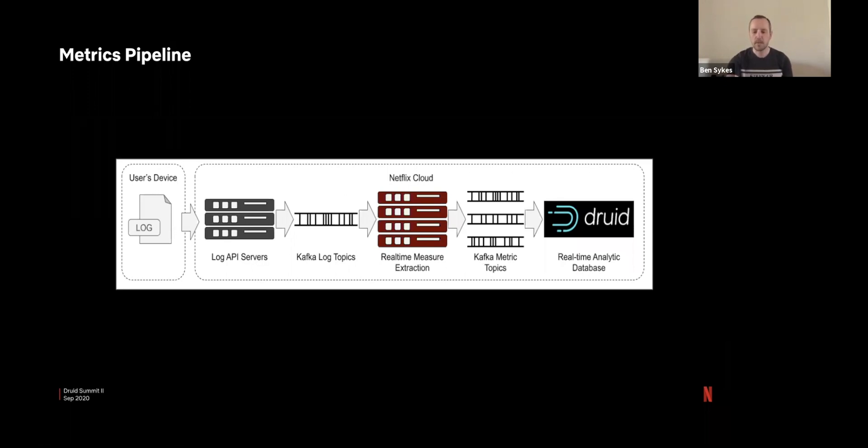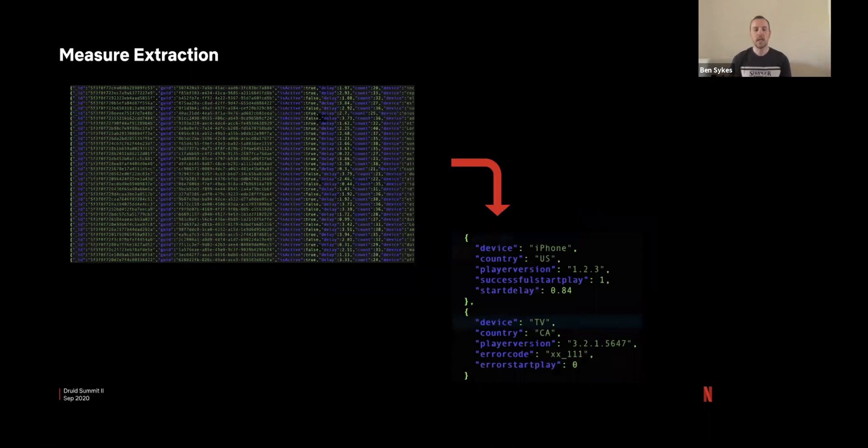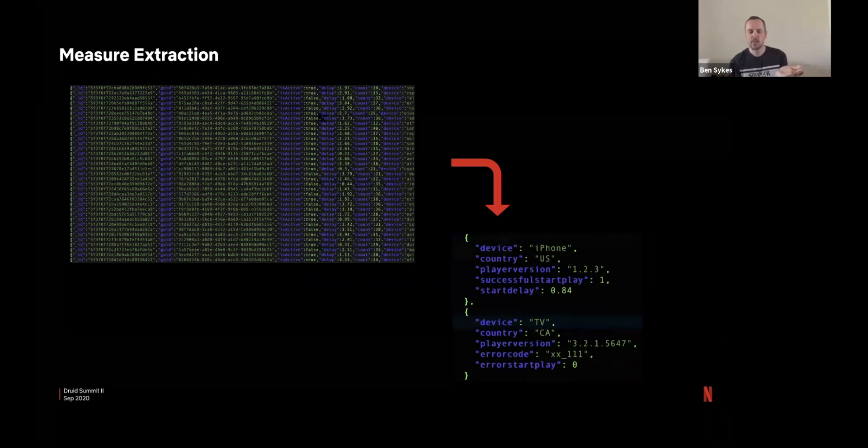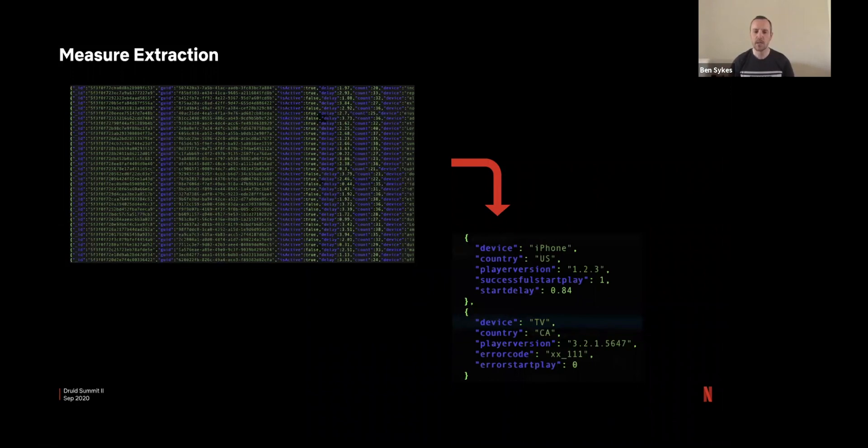So what does the measure extraction look like? We get a lot of logs with more information than we actually want to extract from the measures here. There are certain fields which we're not interested in at this point, or maybe some debug logs within those log fields. So in that Mantis job, we will extract just the measures we want, and we will format them into a very flat key value structure, which is ideal for going into Druid.